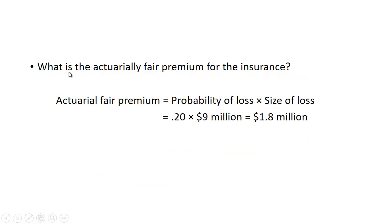What's the actuarially fair premium for the insurance? It's the probability of loss times the size of the loss — so 0.2 times 9 million equals 1.8 million dollars.